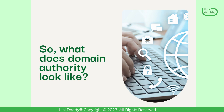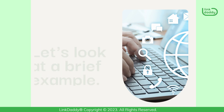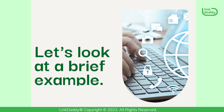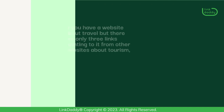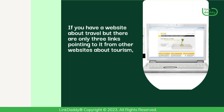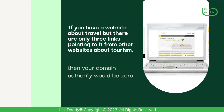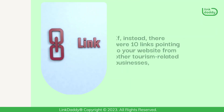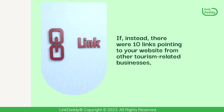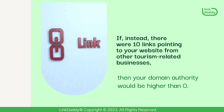So, what does domain authority look like? Let's look at a brief example. If you have a website about travel but there are only three links pointing to it from other websites about tourism, then your domain authority would be zero. If, instead, there were 10 links pointing to your website from other tourism-related businesses, then your domain authority would be higher than zero.